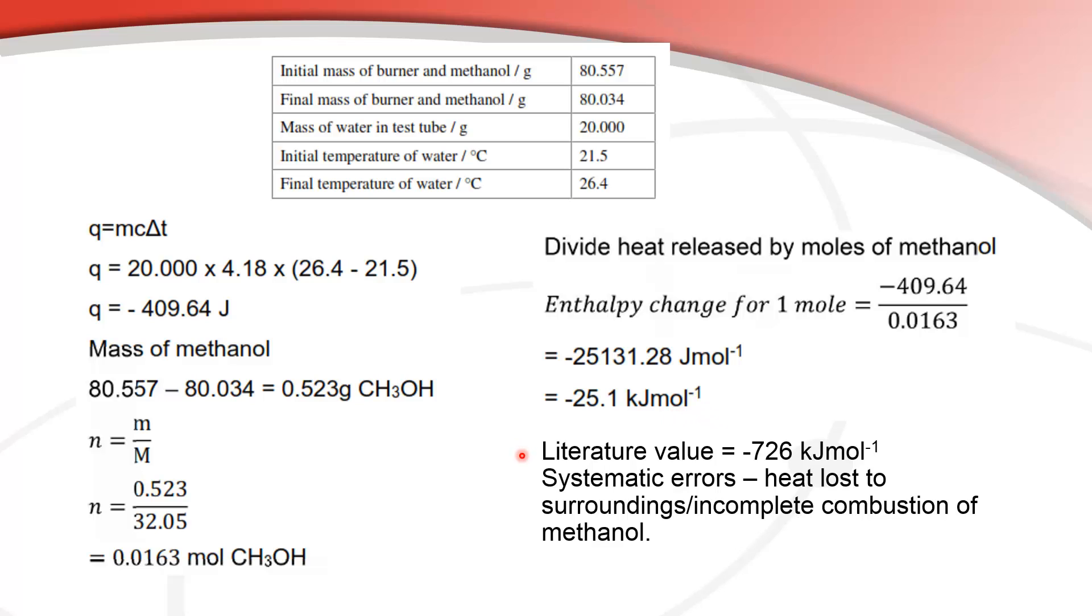The literature value from the data booklet is negative 726 kilojoules per mole so you can see that our answer we calculated here is very very low and what are the reasons for that? Well we'll have systematic errors and they are heat lost to the surroundings because the test tube is a very poor insulator and incomplete combustion of methanol.